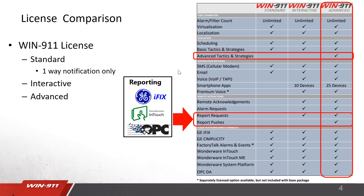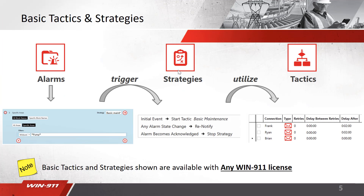On the next few slides, I'll compare the basic tactics and strategies to the advanced tactics and strategies. Basic tactics and strategies are available on any of our licenses. A rundown of how our software works: your alarms trigger a strategy, and then that triggers a tactic. Your alarm comes in, it's filtered using that dynamic method — here we're filtering on the word 'pump', so anything with the word pump will be brought into this basic maintenance strategy. A strategy is a policy that defines your starting, stopping, and re-notifying. This strategy points to a tactic. When this basic tactic goes off, we will email Frank, wait two minutes, email Ryan, wait two minutes, and eventually email Brian. It's straight down the list, standard configuration. You can also configure a delay before notification and retries.